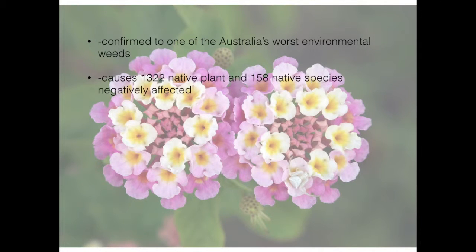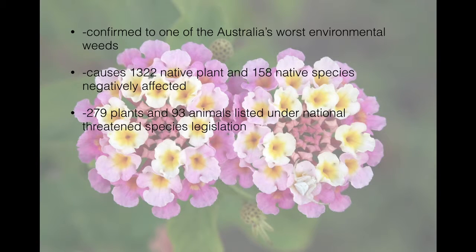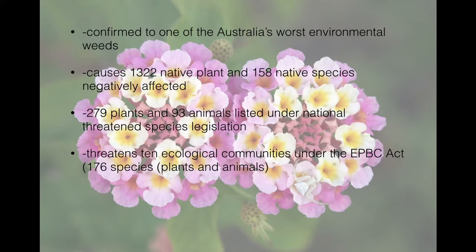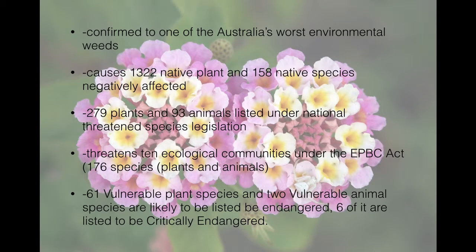There are only 142 native species that utilize any of its benefits. There are 279 plants and 93 animals listed as at risk and threatened under National Threatened Species Legislation. It also threatens 10 ecological communities currently listed under the EPBC Act. Data shows that 61 vulnerable plant species and 2 vulnerable animal species are likely to be listed as endangered, and 6 are listed as critically endangered.